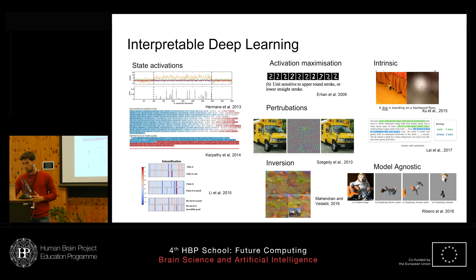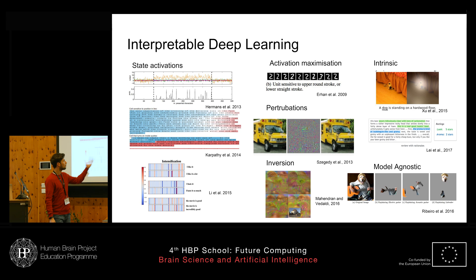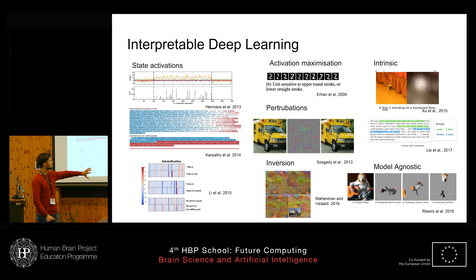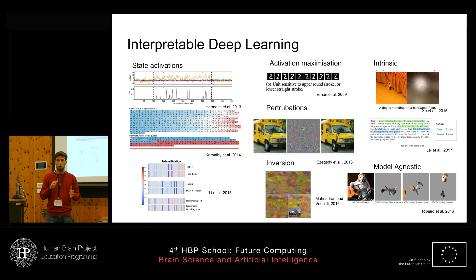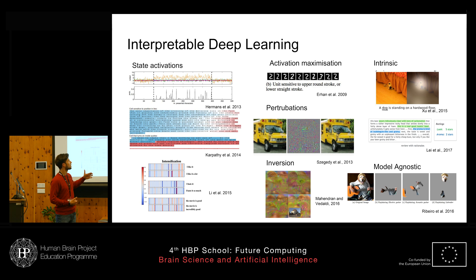In deep learning, of course, everything related to deep learning people jump into enthusiastically, and there is a lot of research going on. It's quite a broad landscape of all the possible methods people are trying out. I'm just going to talk about two methods: activation maximization and inversion methods.